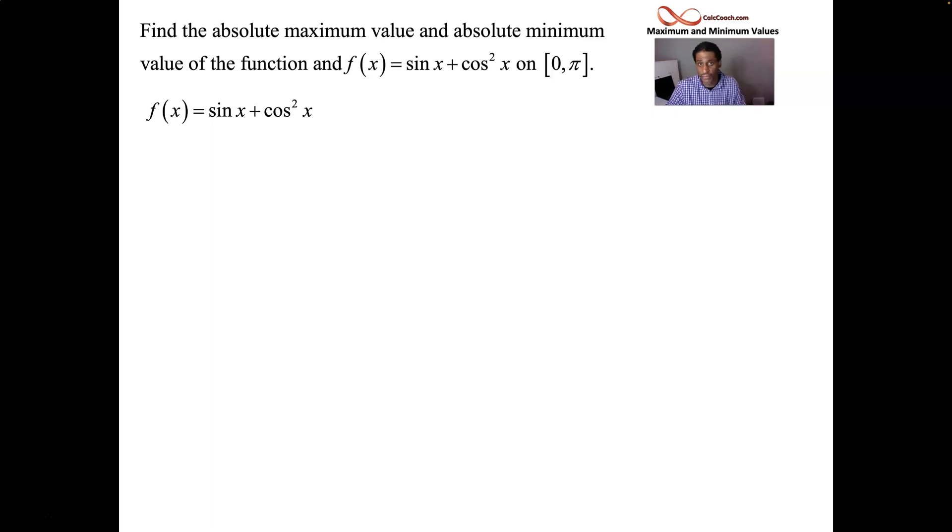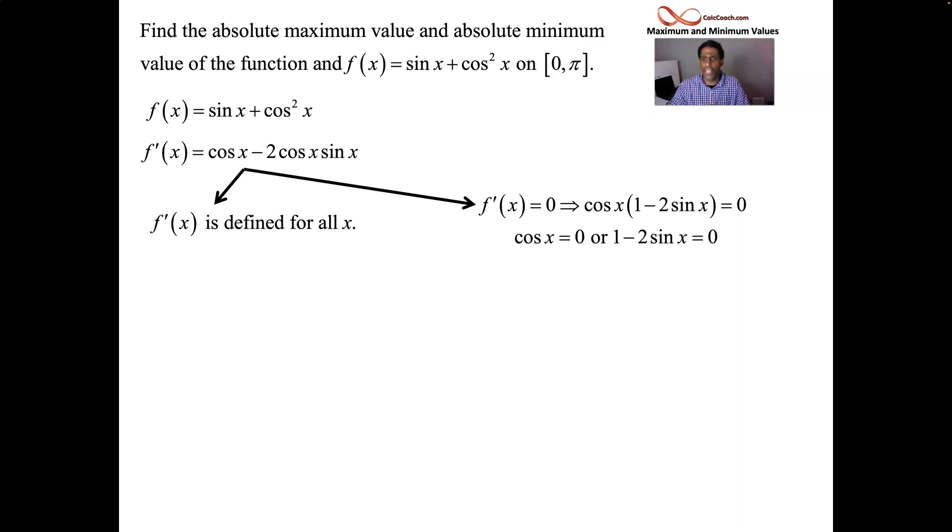Trig derivative. Sine's derivative is cosine. When it comes to cosine squared, you've got to do a power and a chain. You've got to bring the 2 down in front, take cosine to the 1, and then multiply by cosine's derivative, who is negative sine of x. That's how the plus turns to a minus. This is a nice intrigue in nature. It's defined for all x's, so you can't get any critical numbers that way. Set it equal to 0. Factor out what the two terms have in common, and then take those separately and set them equal to 0. Either cos(x) is 0, or 1 - 2sin(x) is equal to 0. Now, we're only interested in 0 to π.